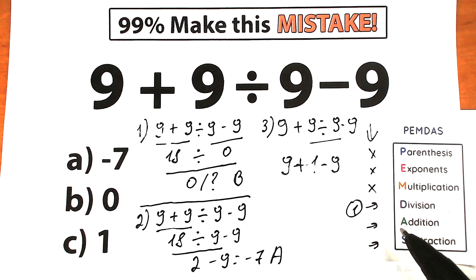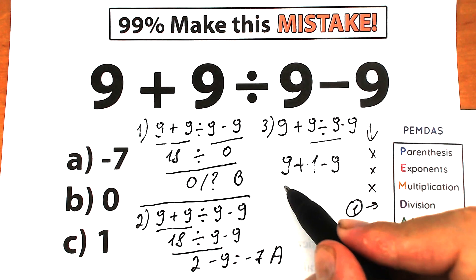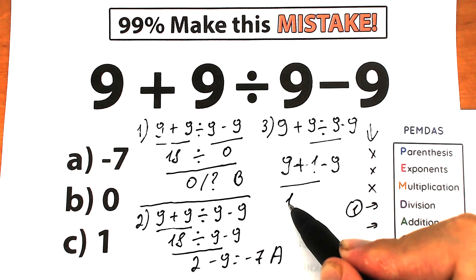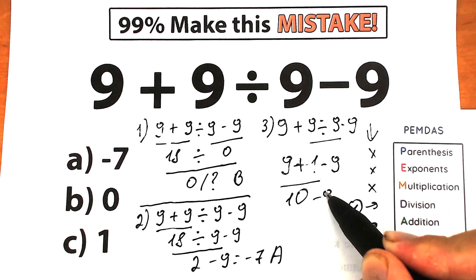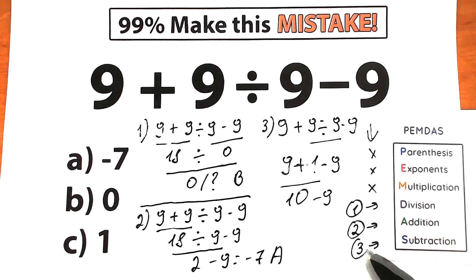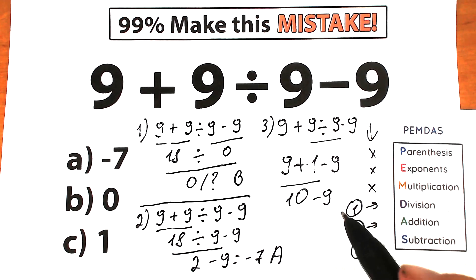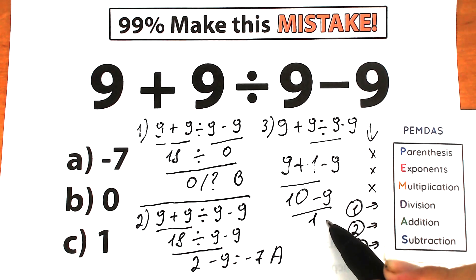Next step is addition because in a strict order from left to right: 9 plus 1 which is equal to 10, then 10 minus 9. Our last step — the third step — is subtraction: 10 minus 9 which is equal to 1. This is option C.